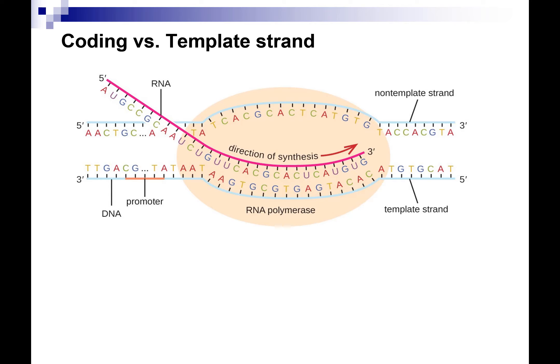The template strand is the one copied, with base-pairing going on — two hydrogen bonds and three hydrogen bonds. The direction of synthesis is 5' to 3', so RNA polymerase always adds nucleotides to the 3' end. RNA polymerase, like primase, can just start anywhere — as soon as RNA polymerase hits the promoter, it can start copying. It doesn't need that 3' hydroxyl like DNA polymerase.